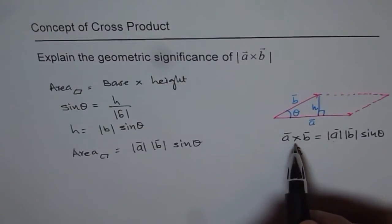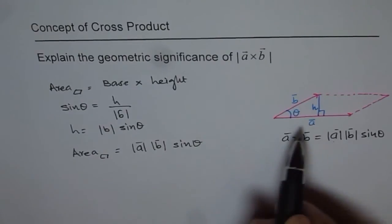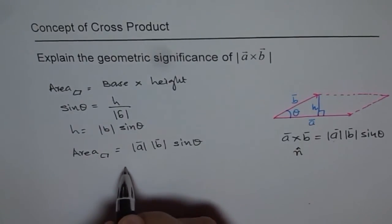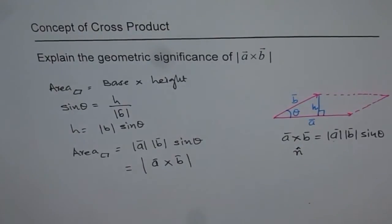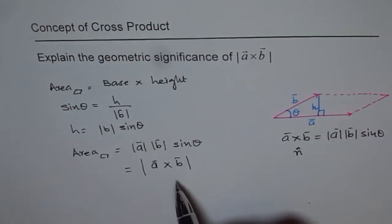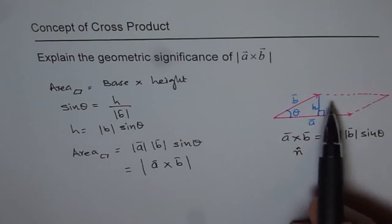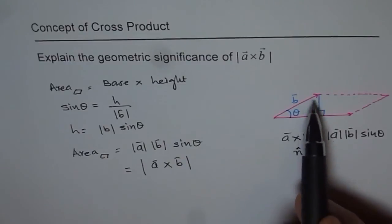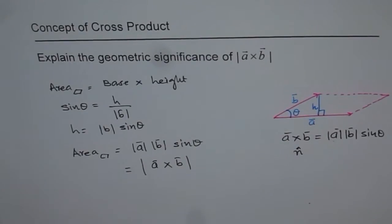But when we are considering just the magnitude, then the magnitude is same as area of parallelogram. So we can write this as area equals magnitude of A cross B. So the magnitude of A cross B actually is equal to area of parallelogram formed by vectors A and B. So that is the geometrical significance of magnitude of A cross B.